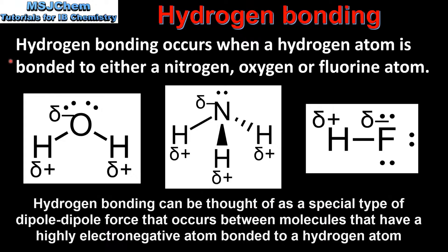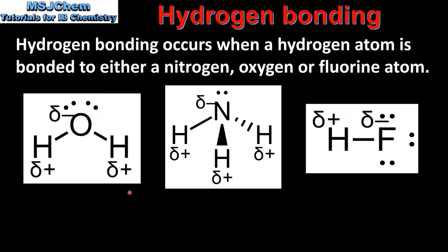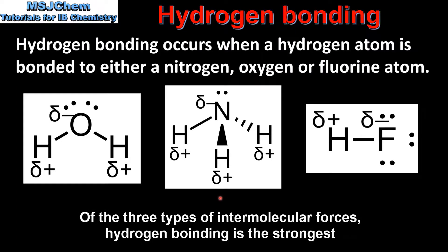The last type of intermolecular force is hydrogen bonding. Hydrogen bonding occurs when a hydrogen atom is bonded to either a nitrogen, oxygen or fluorine atom. Here we can see three examples of molecules that can form hydrogen bonds. From left to right we have H2O water, NH3 ammonia and HF which is hydrogen fluoride. In each of these molecules there is a hydrogen atom bonded to either an oxygen, nitrogen or fluorine atom. In addition to hydrogen bonds, these molecules also have dipole-dipole forces and London dispersion forces.